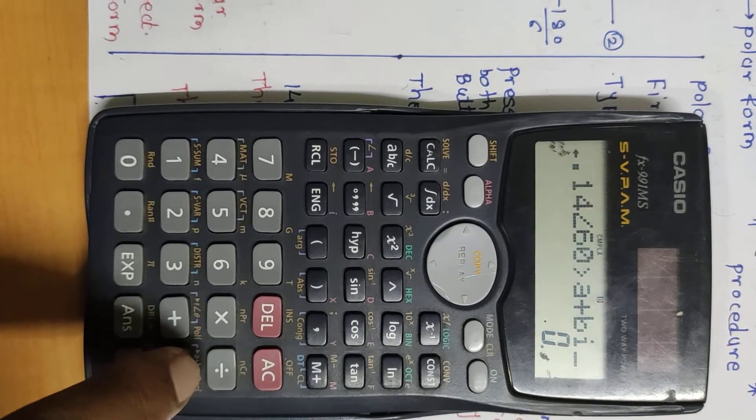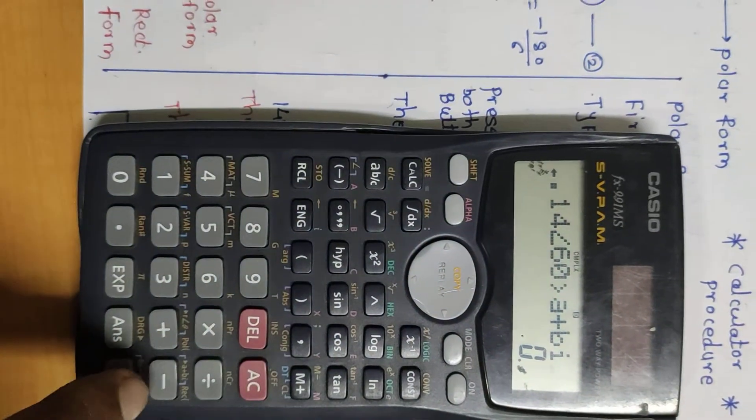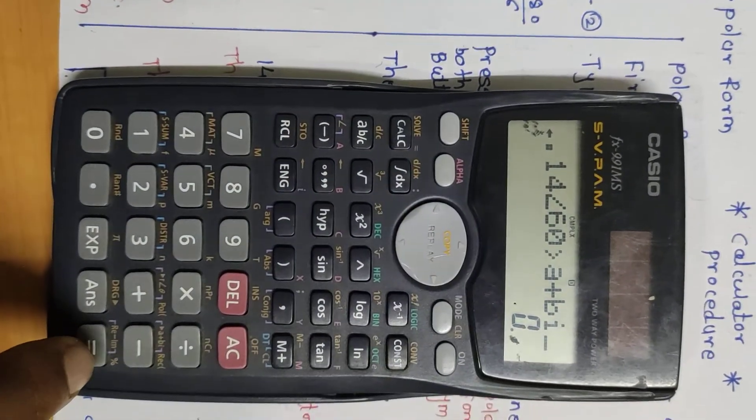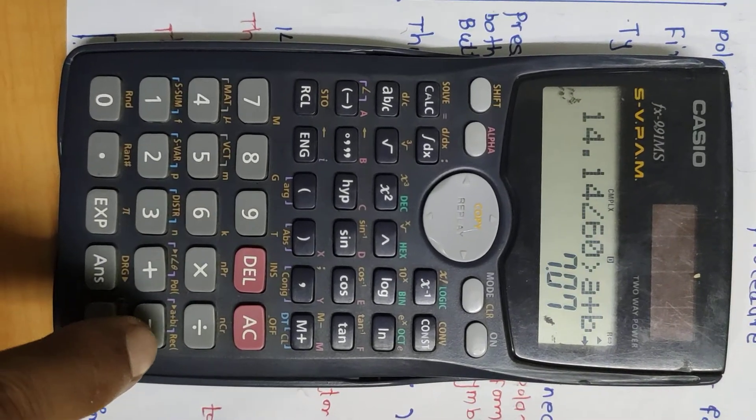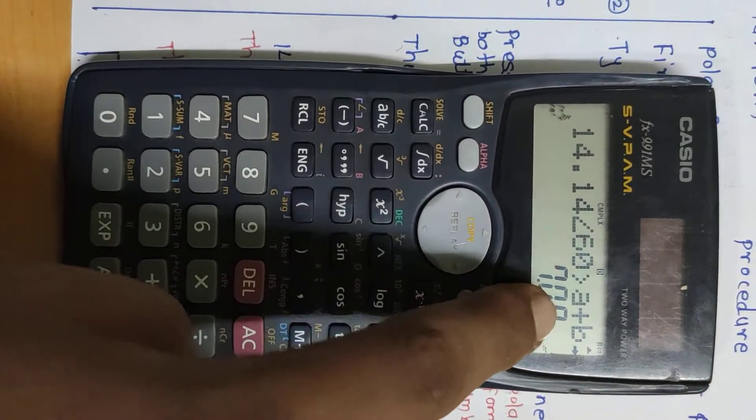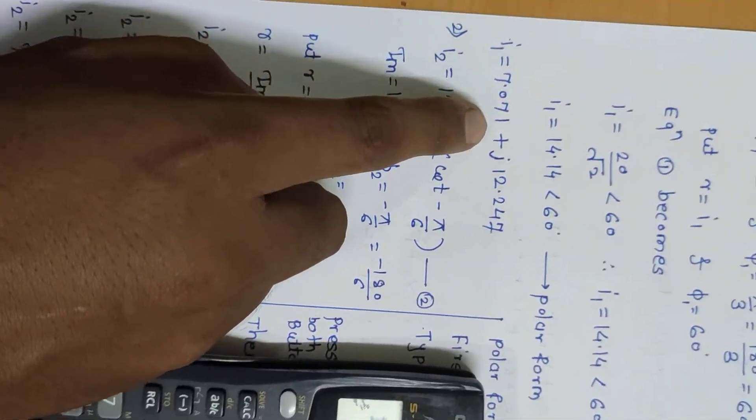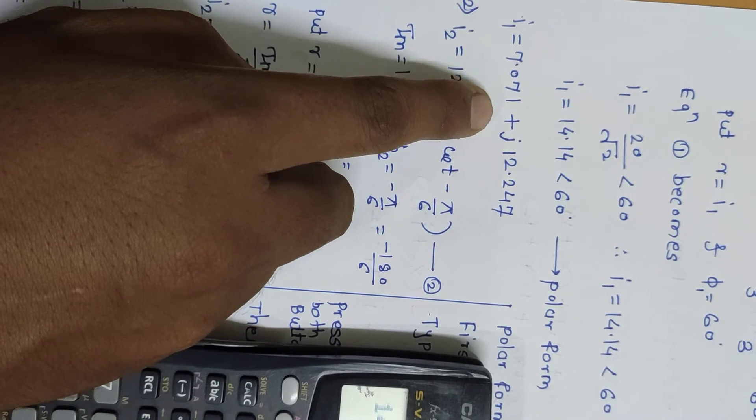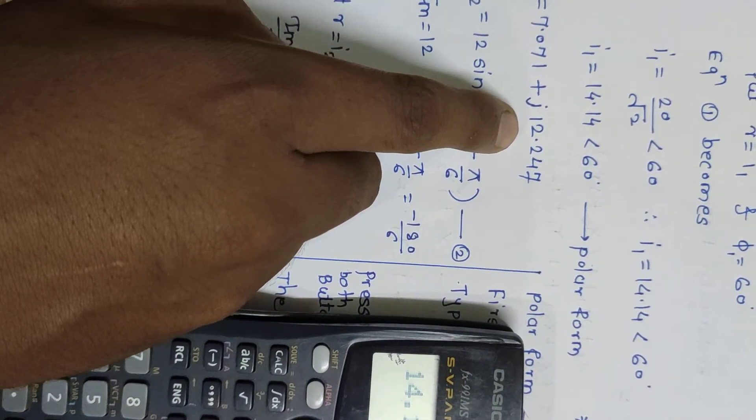Then press equals. You'll obtain 7.07, which is 7.071, plus the next value 12.247.